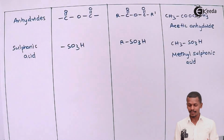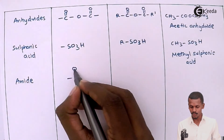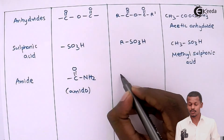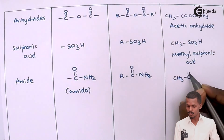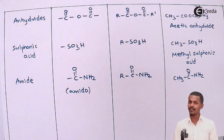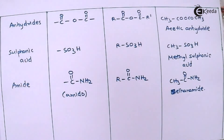One more class remaining is amides. Amides are known because of the functional group –C(=O)NH2, called the amido group. The general formula is RC(=O)NH2. An example is CH3C(=O)NH2, which consists of two carbon atoms, so the IUPAC name is ethanamide. These were the classifications of organic compounds based on functional groups.